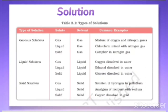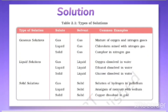If both solute and solvent are gases, they form a homogeneous mixture — this is an example of a gaseous solution. If the solute is a liquid and the solvent is a gas, the example is chloroform mixed with nitrogen gas. If the solute is a solid in gas, the example is camphor in nitrogen gas. These three types are called gaseous solutions because the larger component — the solvent — is in the gaseous state.